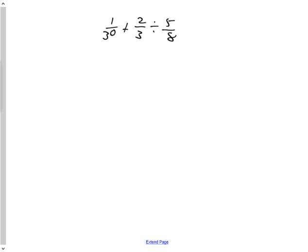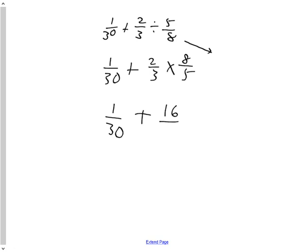Next question is a BEDMAS involving division and addition. We know that when we do any question that has more than one operation, we need to follow BEDMAS. So, 1 thirtieth plus, whatever this is going to be. And this is actually going to be two-thirds multiplied by its reciprocal. Can't reduce cross-ways, so we're just going to multiply that out. We have 1 over 30 plus 16 over 15.